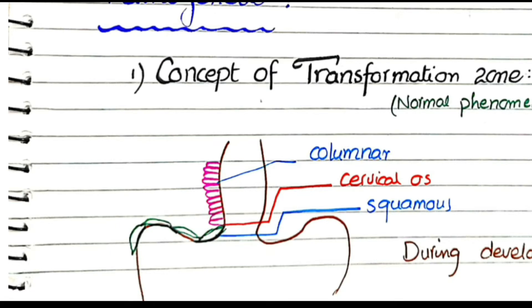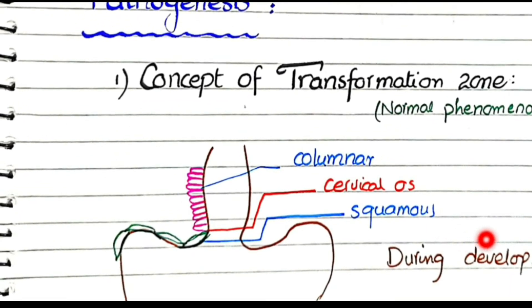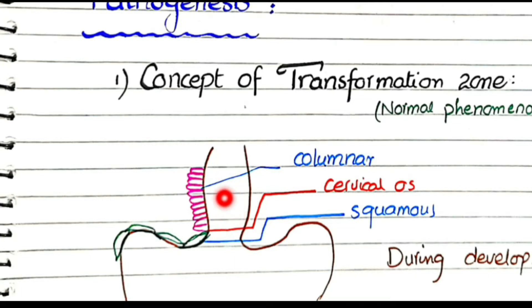During the development of the female, the squamous-columnar junction is present at the level of the cervical os — the cervical opening — which is at the level of the endocervix and ectocervix junction. So between the endocervix and ectocervix there is this squamous-columnar junction, present at the level of the cervical opening.